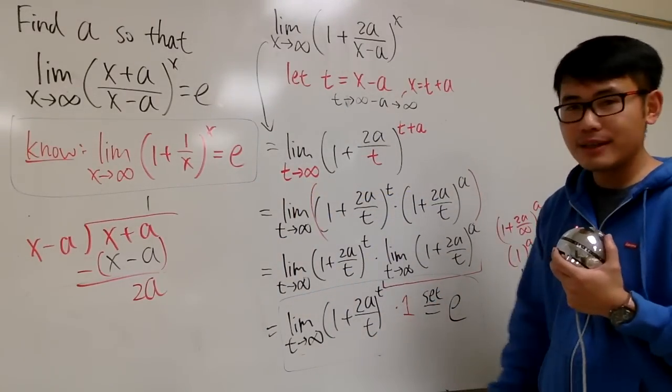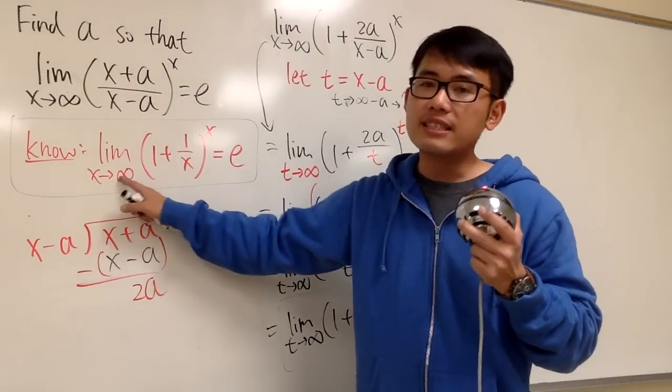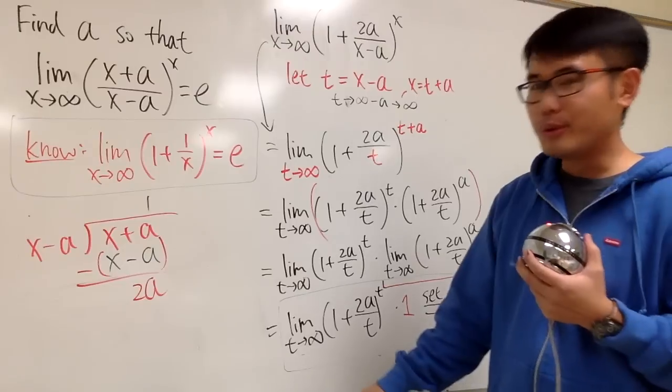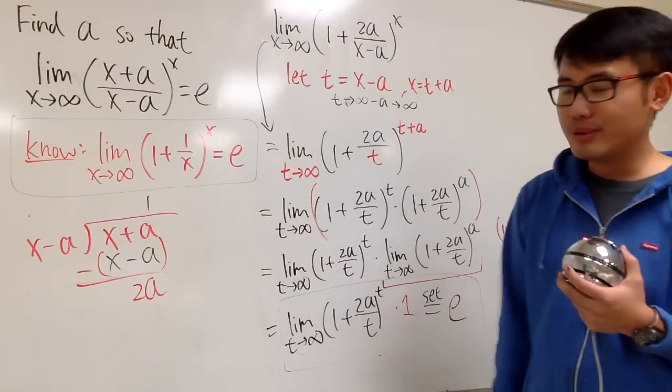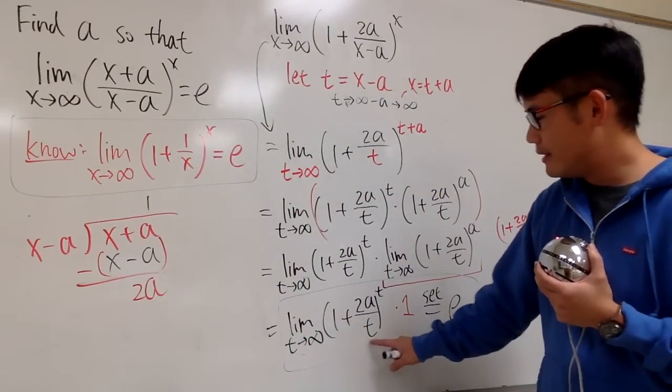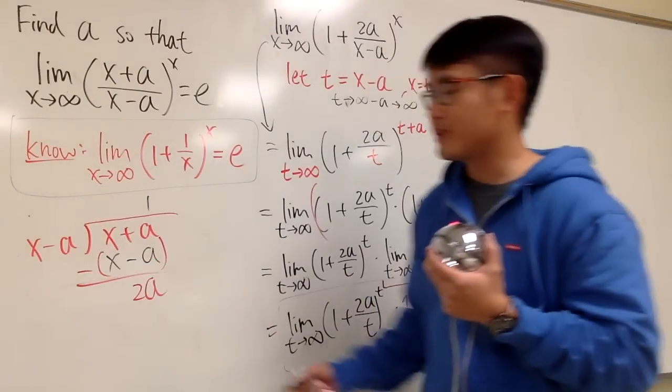t is approaching to infinity. It's the same as saying x is approaching to infinity. The letter doesn't matter. You can use theta, you can use y, up to u. The 1 is the same. This t and t, this x and x. Good.